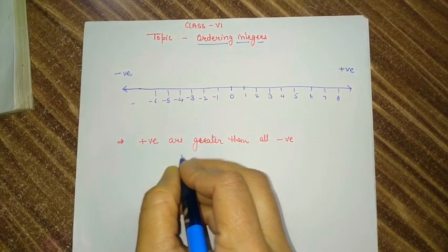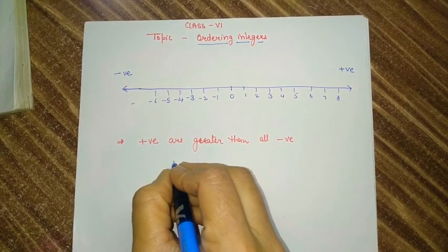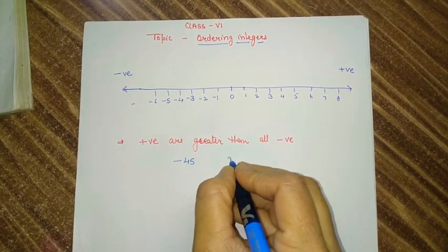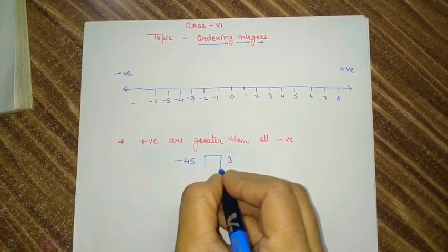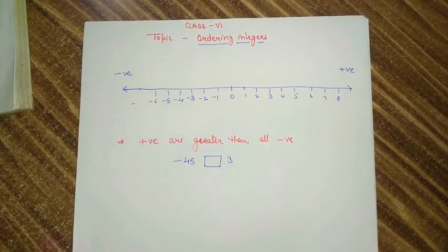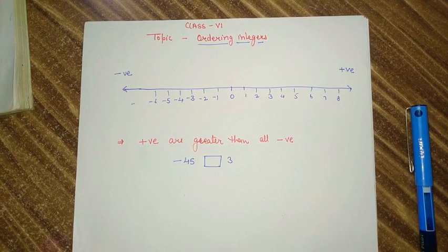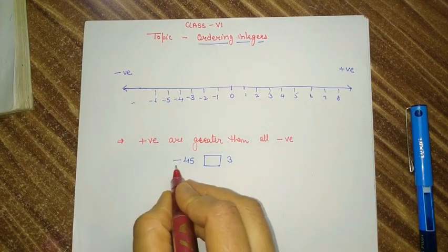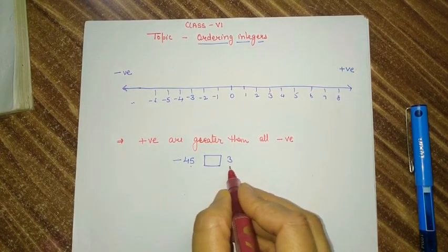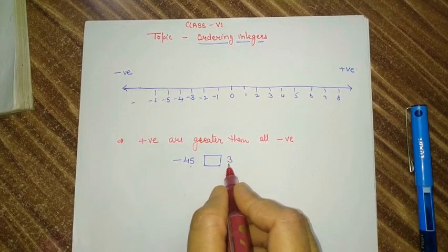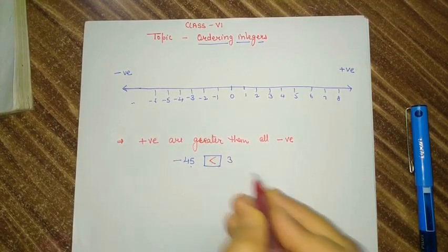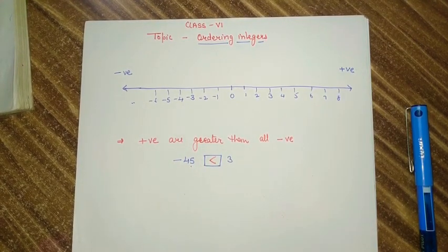If you get a negative number and a positive number together and you have to compare them, remember: all the negative numbers are smaller than positive numbers. For example, if we compare minus 45 and positive 3 to find which number is bigger — according to the rule, all negative numbers are smaller than positive numbers, so here the bigger number is positive 3.